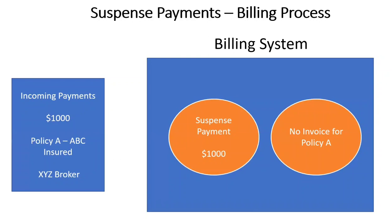So the billing system has a placeholder called a suspense payment. It will keep that incoming payment of one thousand dollars in suspense until it knows which invoice to apply it to. The moment the billing system gets the policy administration information, it will apply that suspense payment to the correct invoice. Suspense payment is essentially a temporary bucket where we store those incoming payment details until the billing system has a clear idea of how to apply them to the correct invoice.